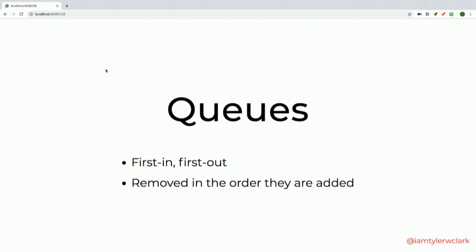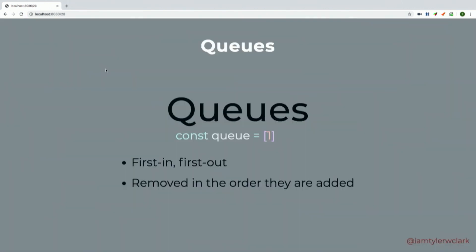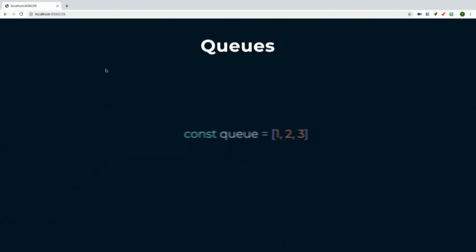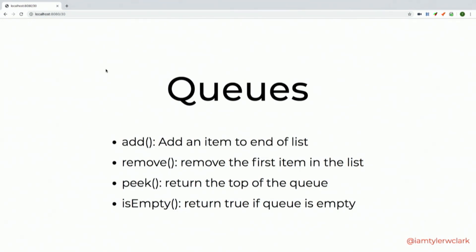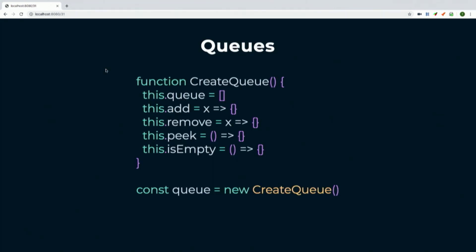Queues are somewhat similar but first-in, first-out — think of standing in line at the grocery store, first one in line is the first one out. So going one, two, three, they come out one, two, three. Similar to a stack, it's a constructor function with an underlying array, and you build methods on it for adding, removing, checking what's in there, and removing the top of the queue.